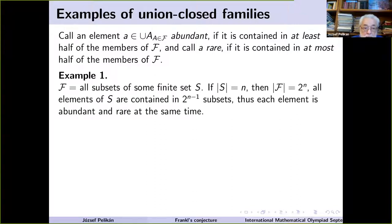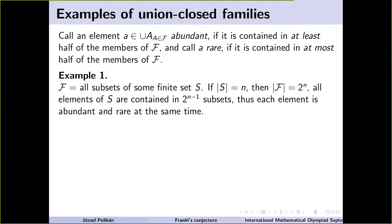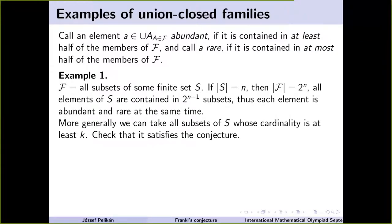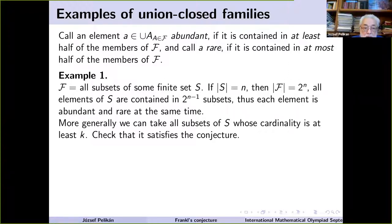First example: take some finite set S with n elements and look at all of its subsets — that's 2^n subsets. Every single element of the ground set S is contained in 2^(n−1) subsets, which is exactly half. So here all the elements are both abundant and rare at the same time. More generally, we can take all subsets whose cardinality is at least k, where k is some fixed number between 0 and n.